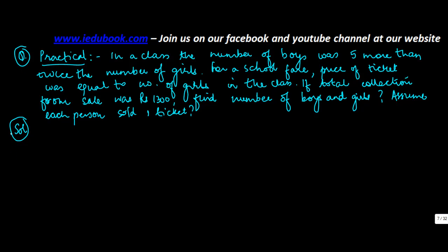Now this is a very interesting question. So there is a class which has girls and boys. It says that the number of boys was 5 more than twice the number of girls. So if the number of girls was x, how many boys were there? 5 more than twice the number of girls. So boys were 2 times the number of girls plus 5.